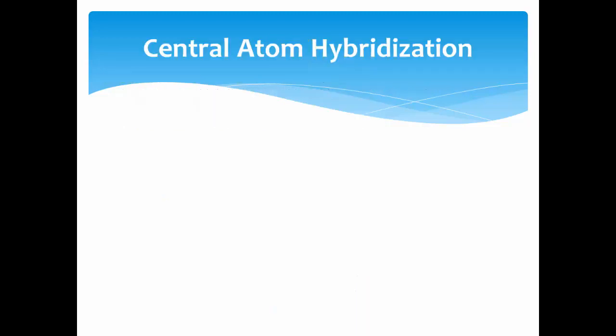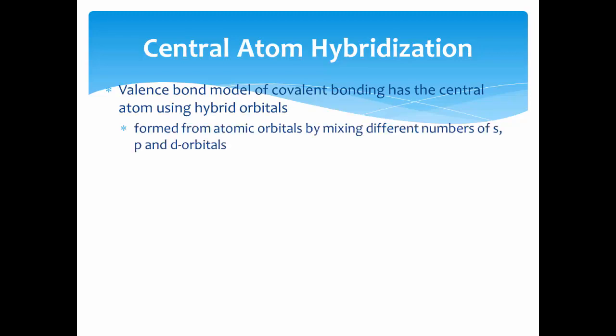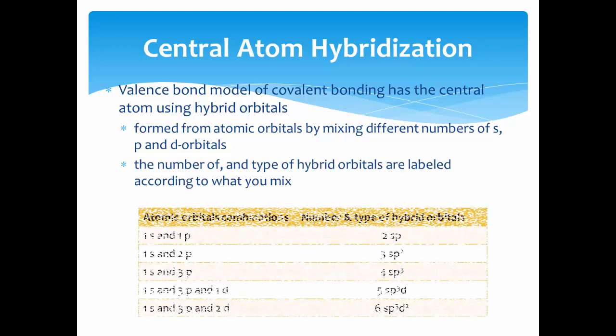Also important to molecular models is the concept of central atom hybridization. This is where the valence bond model of covalent bonding has the central atom using hybrid orbitals, which are formed from atomic orbitals by mixing different numbers of s, p, and d orbitals.